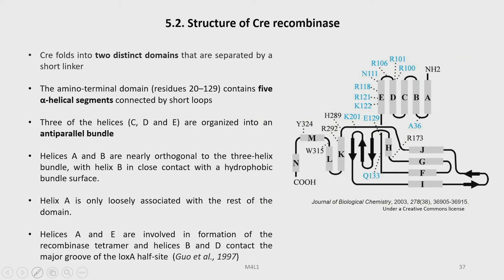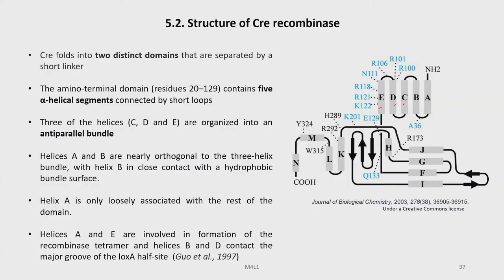Let us look into the structure of the Cre recombinase. The Cre falls into two distinct domains separated by a short linker. The amino-terminal domain from residue 20 to 129 contains five alpha-helical segments connected by short loops. Three of the helices — C, D, and E — are organized into an anti-parallel bundle. Helices A and B are nearly orthogonal to the three-helix bundle, with helix B in close contact with the hydrophobic bundle surface, while helix A is only loosely associated with the rest of the domain.